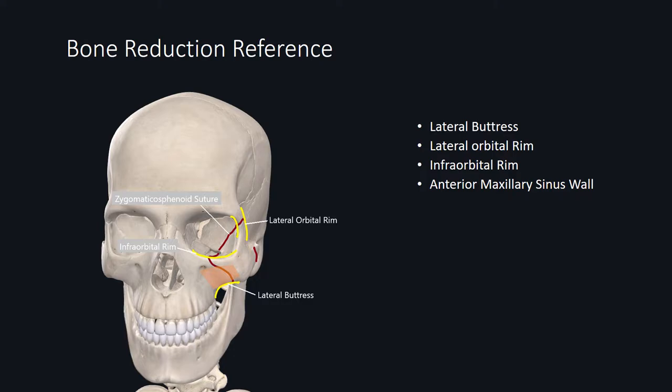The last key reference is the anterior maxillary sinus wall. You'll note that initially along the fracture line, the two planes are sitting at different depths. As the bone gets reduced properly, the maxillary sinus wall will come into the same plane, confirming proper reduction. One of the commonly asked questions regarding ZMC is what is the most accurate suture line to use as a reference. The answer is the zygomatic sphenoid suture line. However, this location is intraorbital and it's not practical to use as a visual reference.